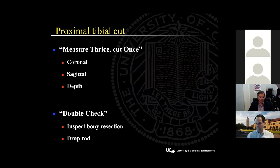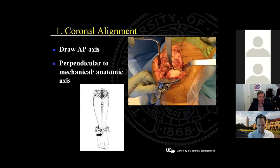For the proximal tibia cut, my classic teaching is 'measure thrice, cut once.' What I mean is you have to first check your coronal and sagittal alignment of the cutting block and your depth of resection before pinning it. Once you've made the cut, it's important to do the double check of not only inspecting your bony resection wafer but also using a drop rod to check alignment. To set the coronal alignment of the tibia, you want to first draw an AP axis right down the tibial spines, so that you don't create a varus or valgus resection by the slope cut into your proximal tibia. Then I palpate the distal tibia and ensure that the shadow created by my headlight and the vertical bar of the extramedullary guide are co-linear.